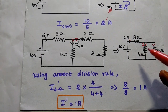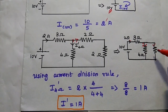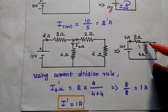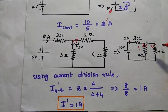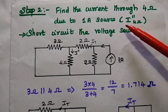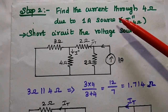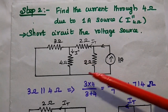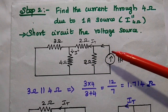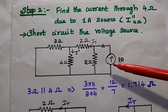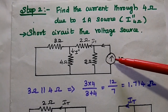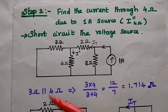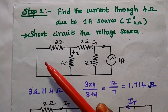Since these two resistance values are equal, the current is also equally divided. In the next step, we are going to find out the current through this 4 ohm resistor due to the current source, which is I double dash.